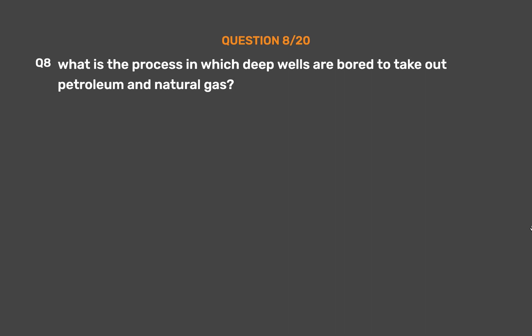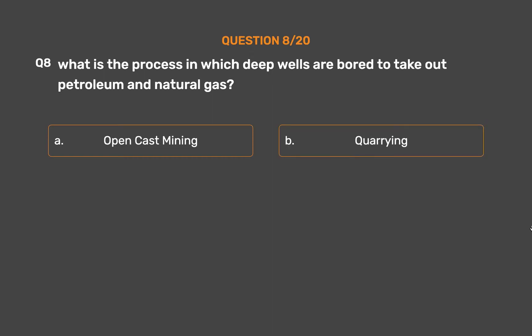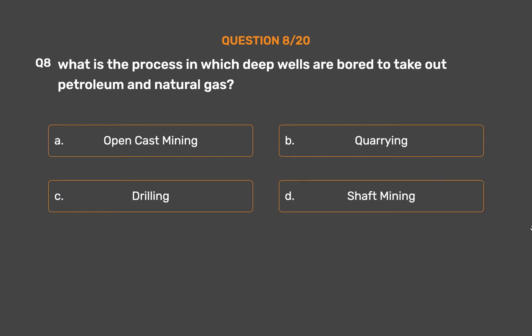Question 8: What is the process in which deep wells are bored to take out petroleum and natural gas? Option A: Open cast mining. Option B: Quarrying. Option C: Drilling. Option D: Shaft mining.